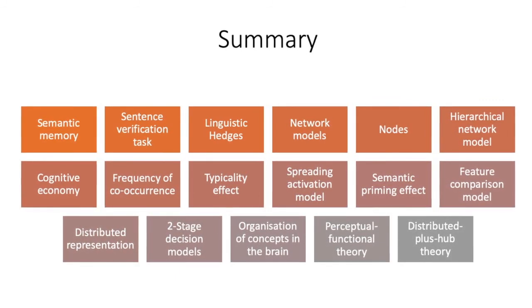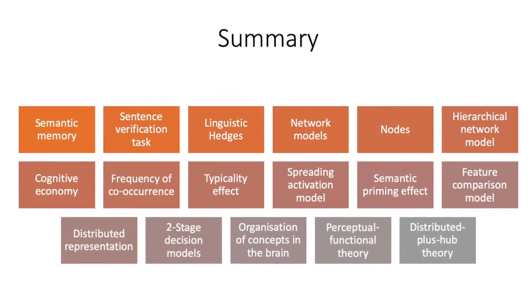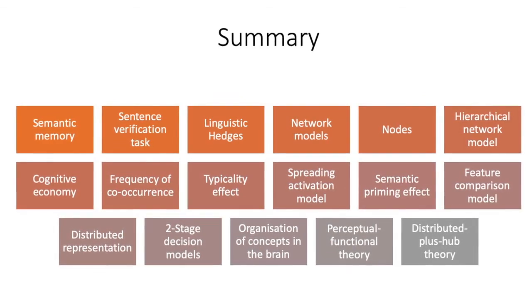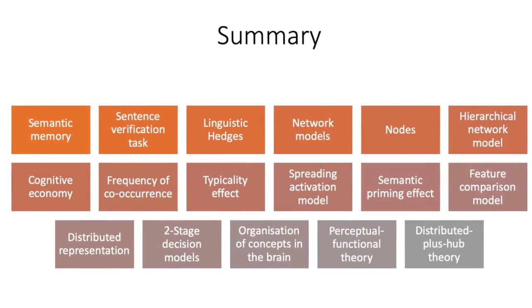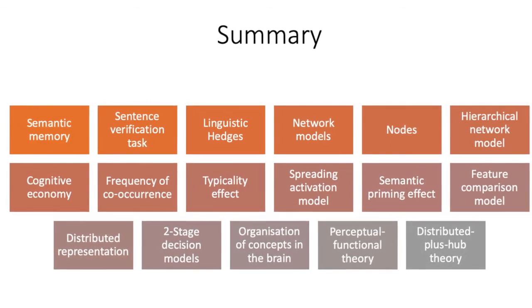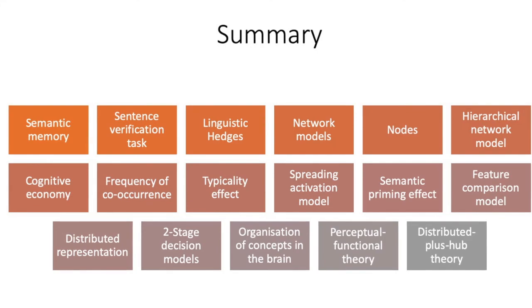semantic priming effects, feature comparison models, distributed representation, two-stage decision models, organization of concepts in the brain, perceptual functional theory, and finally distributed plus hub theory. Thanks for watching, and join me in the next video where I talk about concepts and categories. Bye bye.